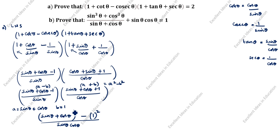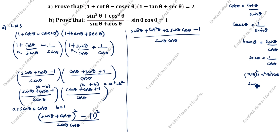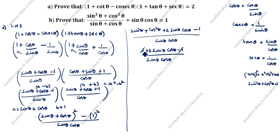Next, how we will split? Using the (a + b)² format. What is the formula? (a + b)² = a² + b² + 2ab. We split: a is sin θ, b is cos θ. So we get sin²θ + cos²θ + 2 sin θ cos θ − 1, divided by sin θ cos θ. Since sin²θ + cos²θ = 1, we have 1 + 2 sin θ cos θ − 1.